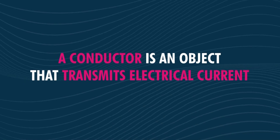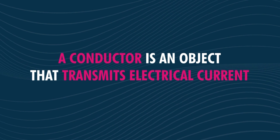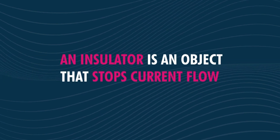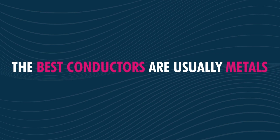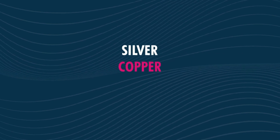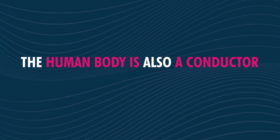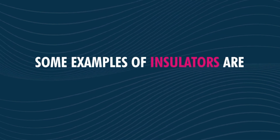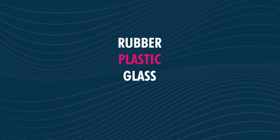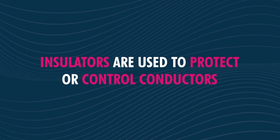Whether it is a small wire used to power a device in your home or a large piece of copper used in the grid, remember that: a conductor is an object that transmits electrical current; an insulator is an object that stops current flow; the best conductors are usually metals — silver, copper and gold; the human body is also a conductor; and some examples of insulators are rubber, plastic, glass and air. Insulators are used to protect or control conductors.